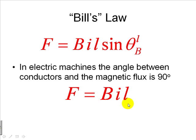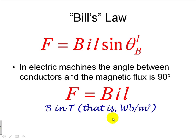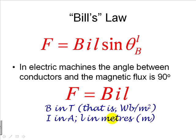B in teslas and webers per square meter, the current in amps, the length of the conductor in meters, and the force in newtons.